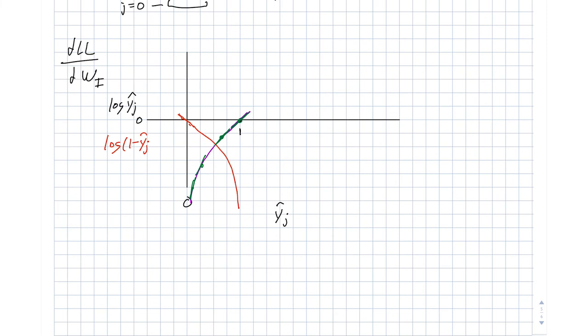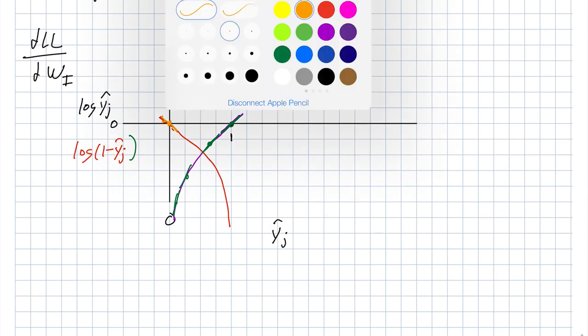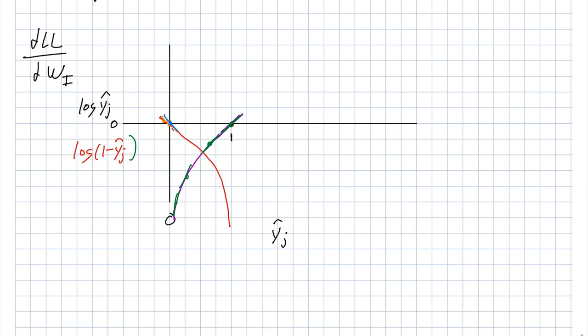So the key here is that the derivative for log y_j hat, for the range that we're interested in, is never sitting at 0, and it's far away from 0. The other side for log 1 minus y_j hat, this has the same property. So here, our slope is negative 1, which is a different color here. Slope is negative 1. And as we head down this curve, this slope is getting larger and larger in magnitude. So again, derivative is always something interesting and far away from 0.